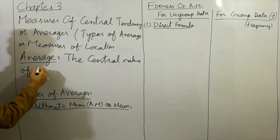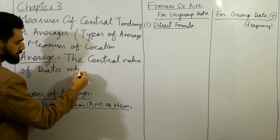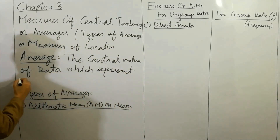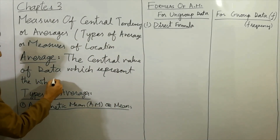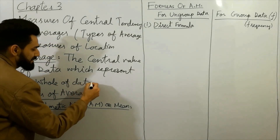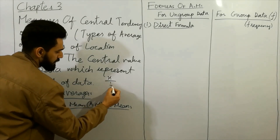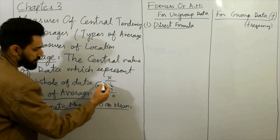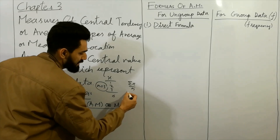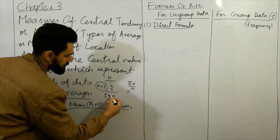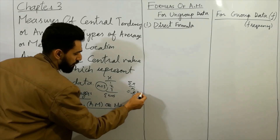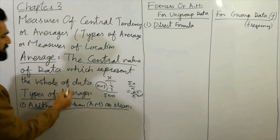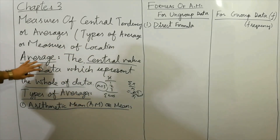The central value of data which represents the whole of data is called the average. For example, if x values are 1, 2, and 3, we calculate: 3 plus 2 plus 1 equals 6, and n equals 3, the number of values. So the mean is Σx over n, which is 6 divided by 3, giving us 2. This central value represents the whole of the data and is called the average.